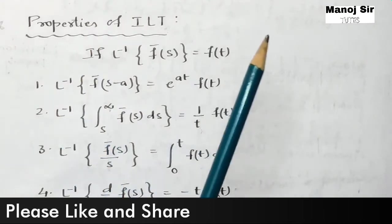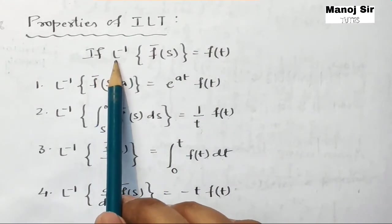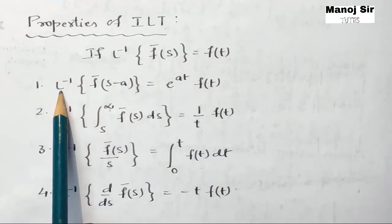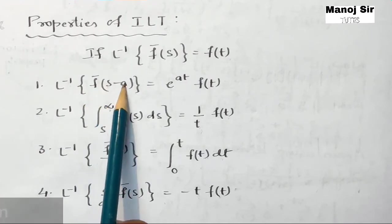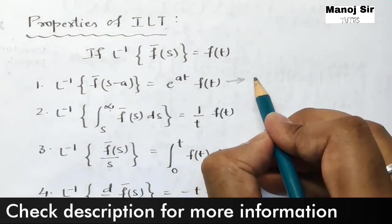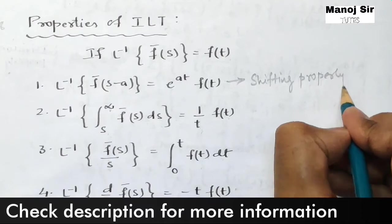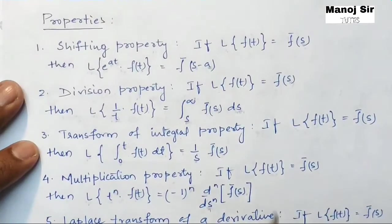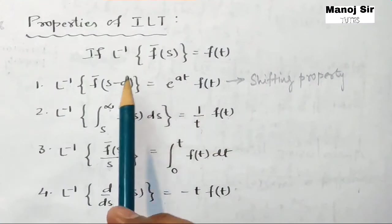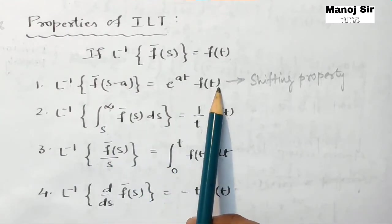Now coming to the most important part of this video — properties of inverse Laplace transform. If inverse Laplace transform of f-bar of s equals f(t), then the first property, the shifting property: inverse Laplace transform of f-bar of s minus a equals e to the power at into f(t). Comparing with Laplace transform: Laplace transform of e to the power at into f(t) gives f-bar of s minus a, and correspondingly inverse Laplace transform of f-bar of s minus a equals e to the power at into f(t).